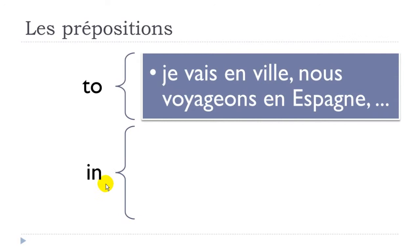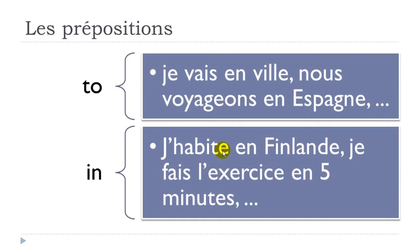Another use is IN. For instance, 'j'habite en Finlande' — 'habiter' is to live, so I live in Finland. Also, 'je fais l'exercice en 5 minutes' — 'faire' is to do, so I do the exercise in five minutes. It's quite important: when you use EN here, it means the time you need to complete the exercise, not that you will do it after five minutes.